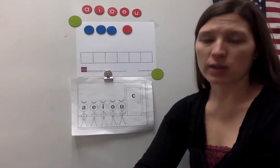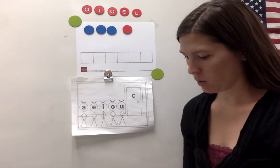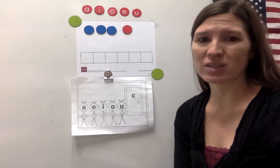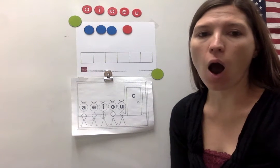Vowels are special because they make two or more sounds. Today we're focusing on the short O sound. Short O says AH. Open your mouth and say AH.